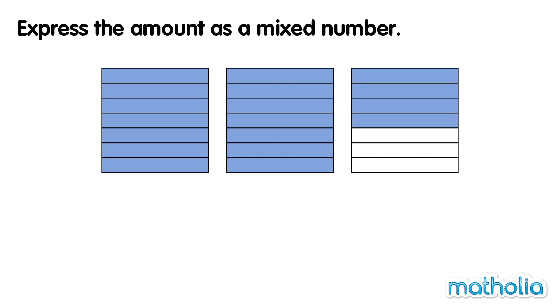How many squares are coloured? Two and four sevenths. Two and four sevenths of the squares are coloured.